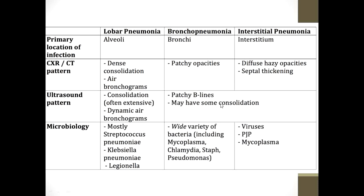On ultrasound, bronchopneumonia shows patchy B-lines and may have some consolidation. Regarding microbiology: in most cases of lobar pneumonia the cause is Streptococcus pneumoniae, though other organisms like Leptospira and Legionella can also give lobar appearances. In bronchopneumonia, causative organisms are a wide variety of atypical organisms like Mycoplasma, Chlamydia, Pseudomonas, and sometimes Staph aureus. Interstitial pneumonias are due to viruses, PCP (Pneumocystis jirovecii pneumonia), and Mycoplasma.